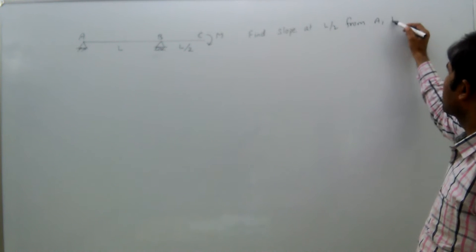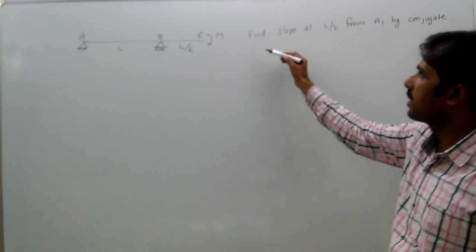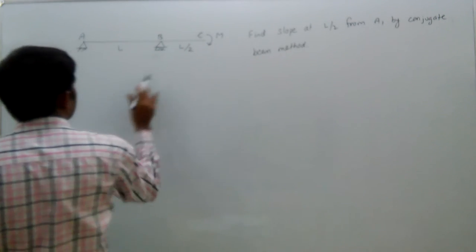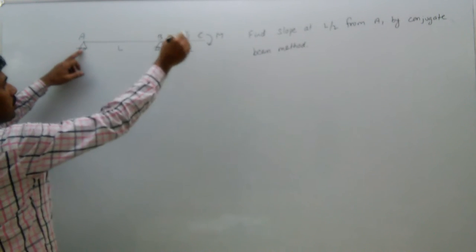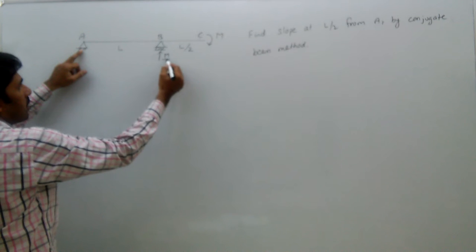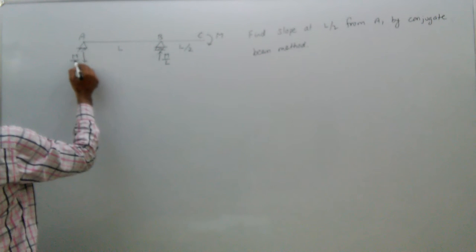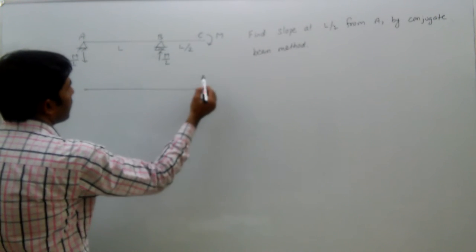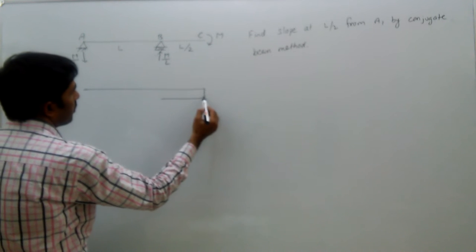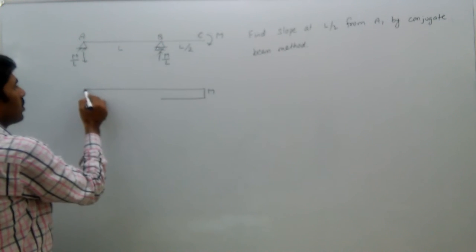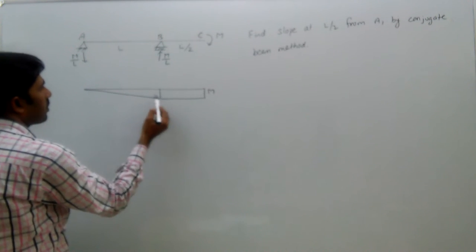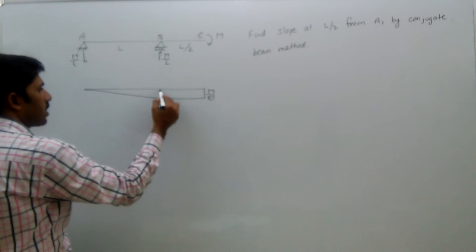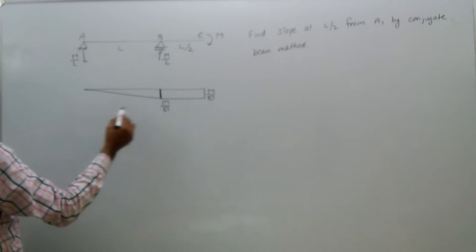We will solve this by the conjugate beam method. The reactions are: the moment is M, so the reaction here is M by L anti-clockwise, meaning upward, and here downward M by L. Analyzing this, the bending moment diagram will be like this — M, from here 0, gradually changing, as shown by the direction diagram.